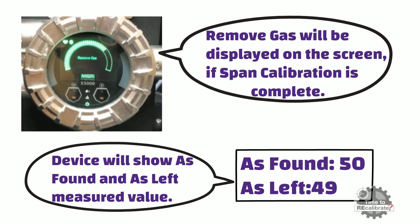It means that device span is set for 50% lower explosion limit, and the as left value is 49% lower explosion limit. It means that the measured value is 49% lower explosion limit.